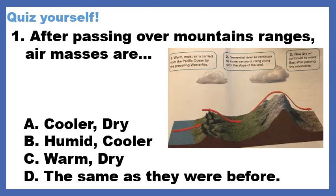Let's do a little quiz. After passing over mountain ranges, air masses are: A, cooler and drier; B, humid and cooler; C, warm and dry; or D, the same as they were before. 5, 4, 3, 2, 1.